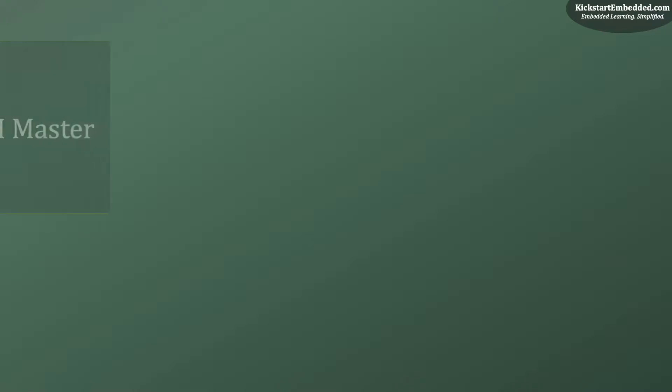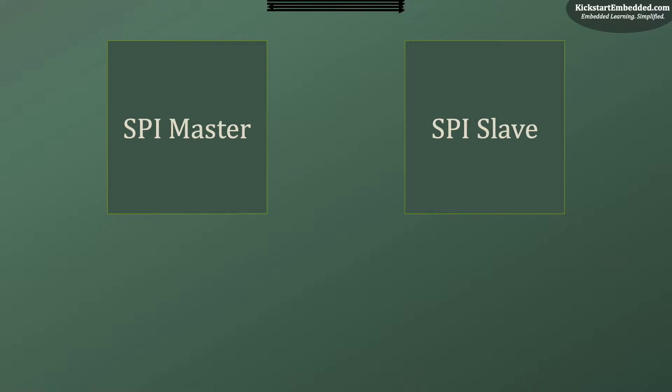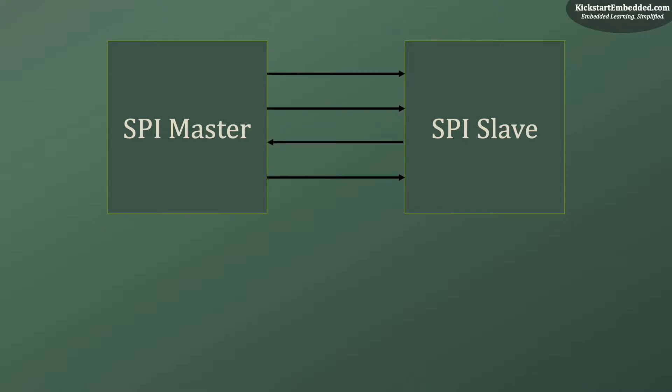Before we actually see how to use this SPI bus, let us first learn a little bit about it. It basically has two main players: the SPI master and the SPI slave. In a typical SPI implementation, you would see four connections. The clock is generated by the SPI master.